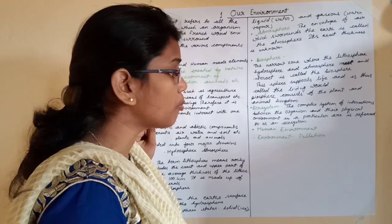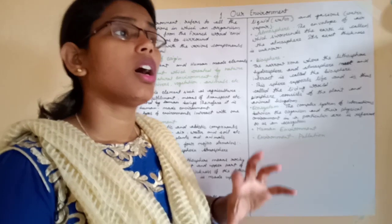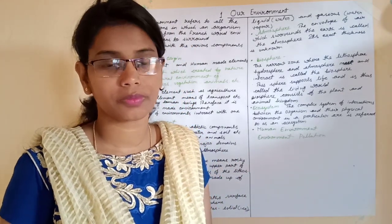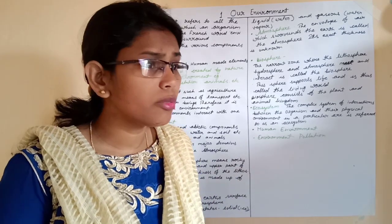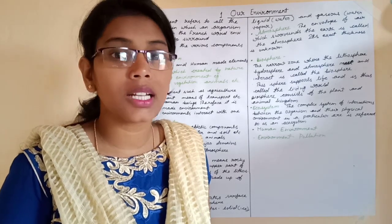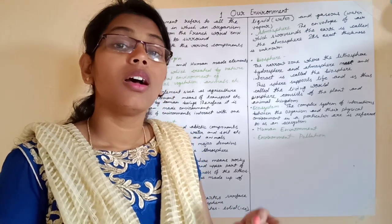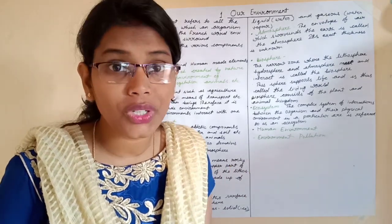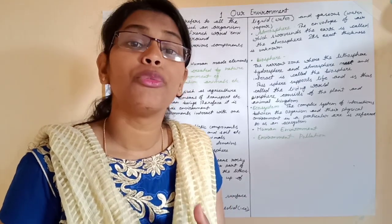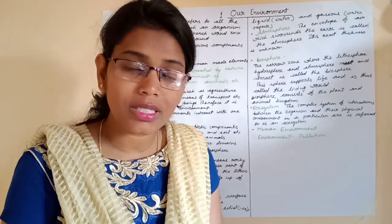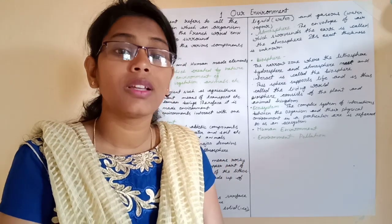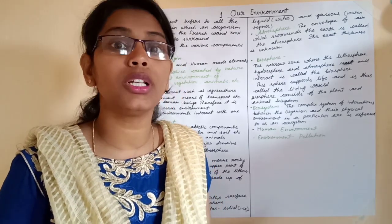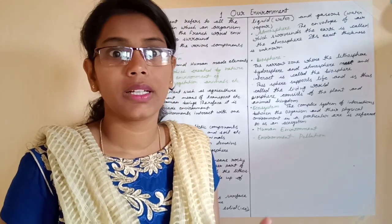We know that today all components of nature — air, water, land, and many other things — have become polluted due to human activity. If we use natural resources in large quantities and in a careless manner, natural resources will become extinct on the earth. At that time, we will not be able to survive, because human beings totally depend on natural resources. So first we should be aware about our natural resources — only then can we develop ourselves and save the earth. Thank you.